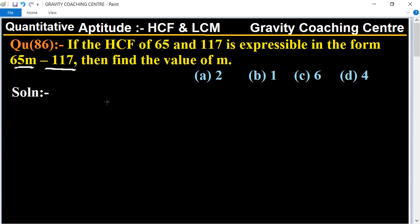In this question, first of all we will find the HCF of given numbers 65 and 117. 65 is divisible by 13, giving 13 times 5. And 117 is divisible by 13, giving 13 times 9.